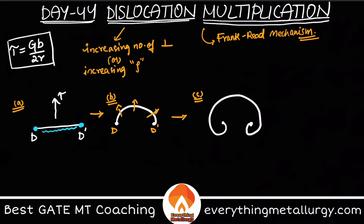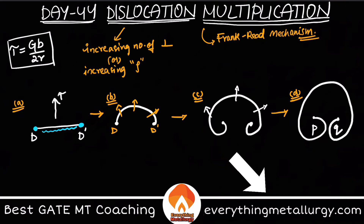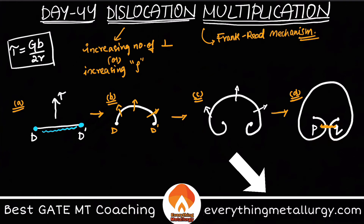After the semicircle forms, this loop will try to expand — space constraints drive it to keep expanding. As it expands, consider two segments P and Q on the loop. Dislocations can annihilate — meaning they can join up — so P and Q will join together, leading to annihilation of those segments.